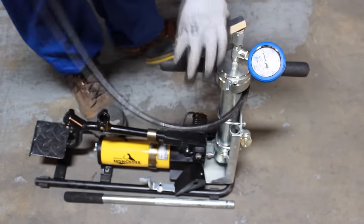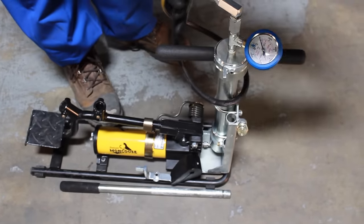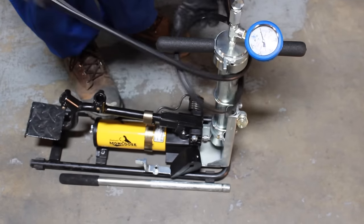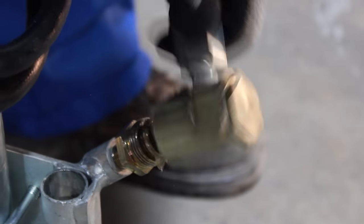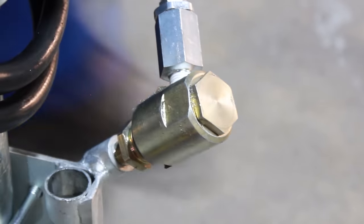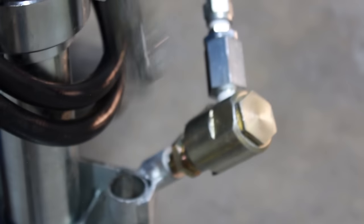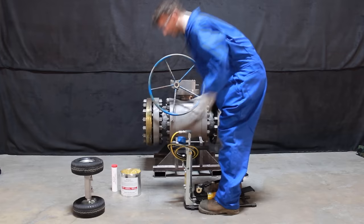The hose can be secured to the Mongoose pump body by wrapping it twice around the barrel just below the cap handles. The button head coupler can then be connected to the fitting, preventing any possible contamination from dirt or debris. Insert the plunger handle into the adjacent slot to secure the hose.